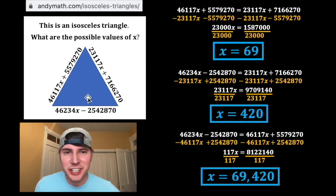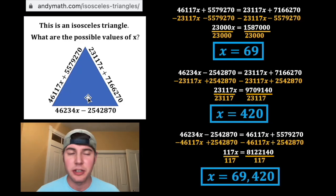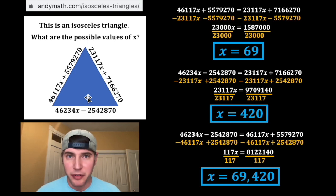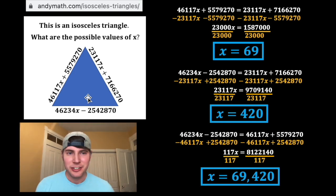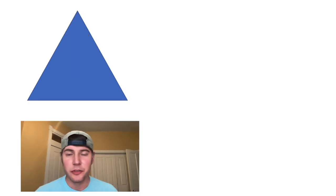Hey guys, this person wants to see how I made this math problem. It's an isosceles triangle with possible values of x: 69, 420, and 69,420. Sure, let me show you.